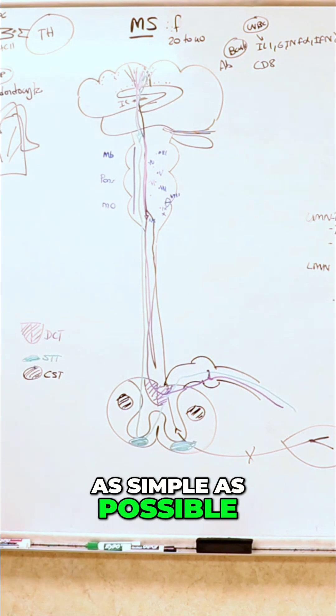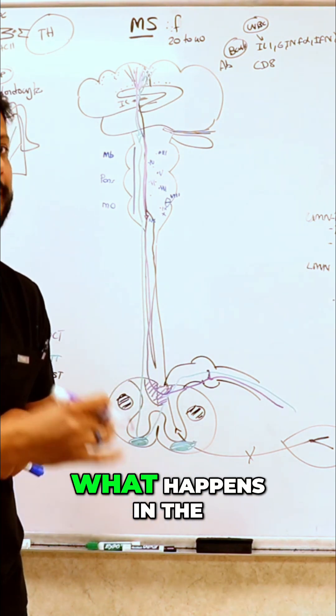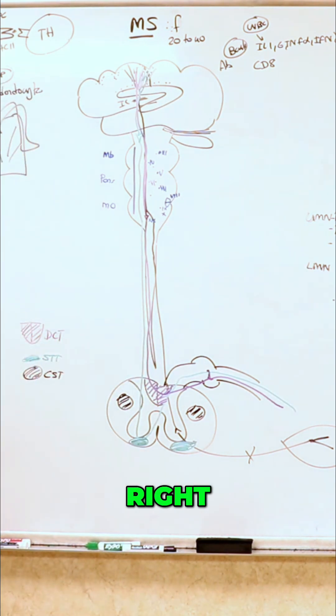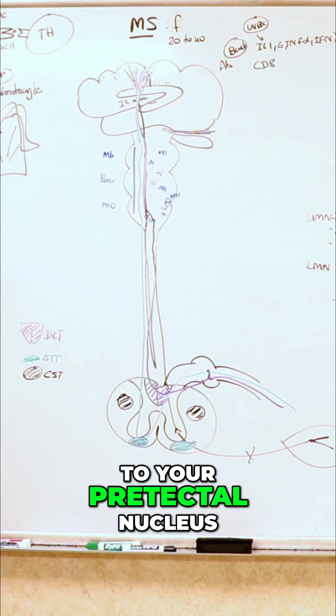I'm going to keep it as simple as possible because the goal is for you to understand what happens in the pupillary reflex. So it's very simple so far, right? You got the optic nerve, optic chiasm, optic tract, so it's just the optic nerve traveling to your pretectal nucleus in the midbrain.